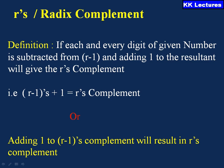Coming to the R's complement, which is also called the radix complement, it is an additional feature of the R minus 1's complement. If each and every digit of the given number is subtracted from R minus 1 and then 1 is added to the resultant, that gives the R's complement. In other words, R minus 1's complement plus 1 equals R's complement. So to perform R's complement, I must first find the R minus 1's complement.